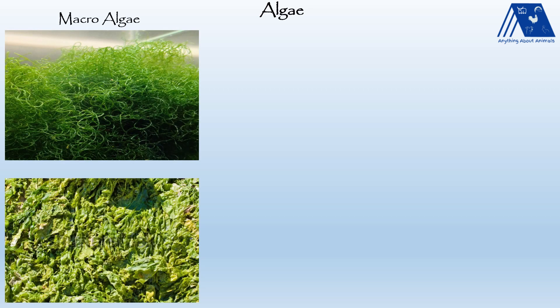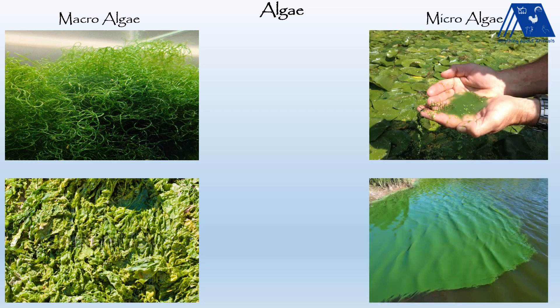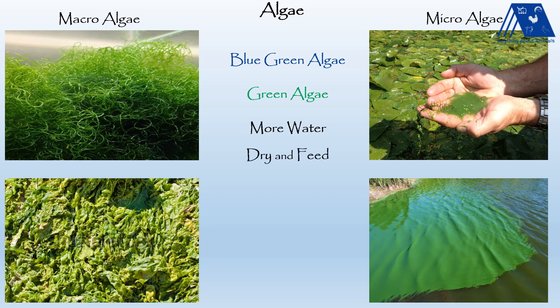There are two kinds of algae. One is macroalgae, also called seaweeds, which are large algaes. There is also microalgae, which are very small algaes. There are more than 1000 species of algae, but very few can be used in animal feed, like blue-green algae and green algae. They have a lot of moisture content, so we need to harvest them, dry them properly, reduce the moisture content, and then use them in animal feed. If used with high water content, feed intake may reduce.